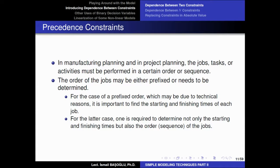We may have seen such an example in project planning courses or operations research courses. We have learned about the mathematical modeling of the critical path method or project planning problems. However, you can also solve such problems using the mathematical modeling approach by defining an optimization model. In these problems, we have situations such as precedence constraints — there are jobs, tasks, or activities which must be performed in a certain order or sequence. The order of the jobs may be either prefixed or needs to be determined.